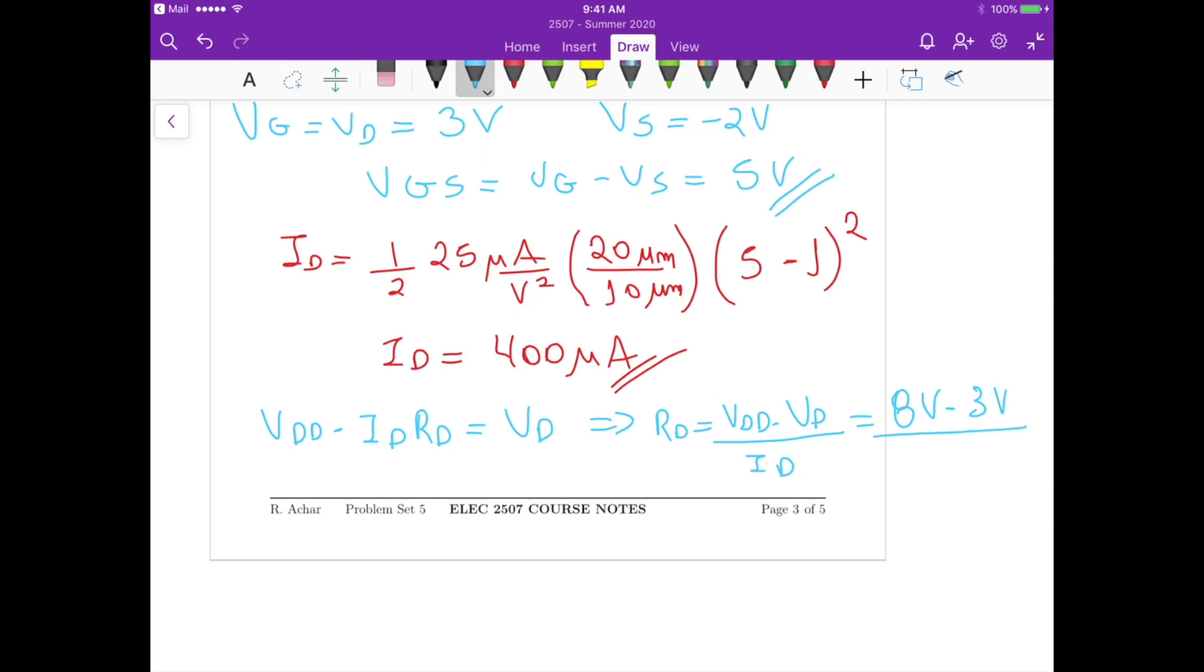Minus 3 volts, divided by 400 microamperes, and this gives us a drain resistance that is equals to 12.5 kilo ohms. So that's the final answer for this particular problem.